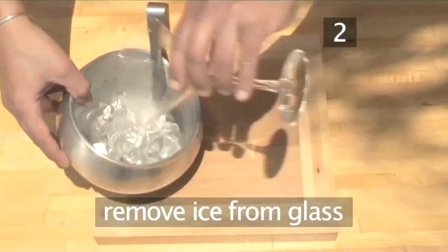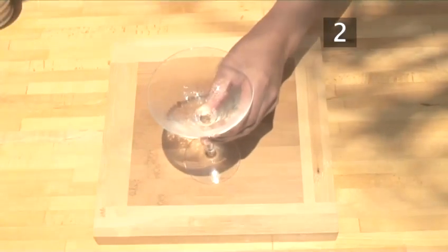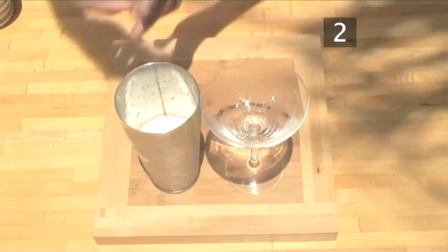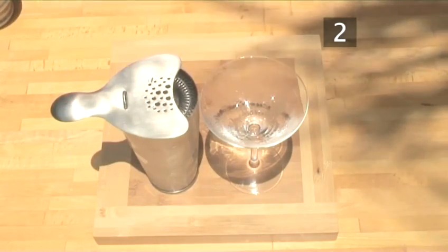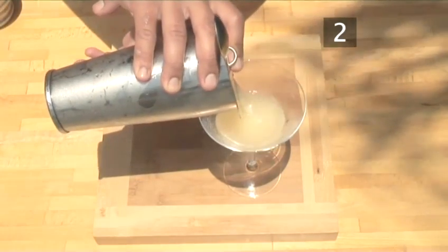Remove the ice from the chilled cocktail glass and attach a strainer to the shaker. If you don't have one, a sieve will suffice. Strain into the glass.